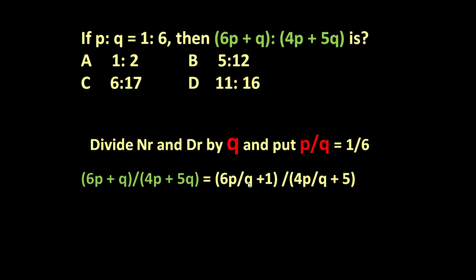This p/q is 1/6, this p/q is 1/6, so replace this p/q with 1/6. So it will become (6 × 1/6 + 1)/(4 × 1/6 + 5).